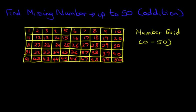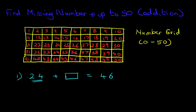Okay, now let's have a look at our first question: 24 plus something equals 46. So how do we use the number grid to answer this question? Well, the first step is we have to find number 24. Have you found number 24 on the number grid? It is over here — I am just going to put a circle around it. There we go, 24.